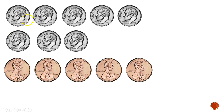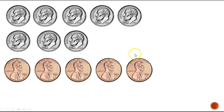Remember, a dime is worth 10 and a penny is worth one. We're going to count by tens first: 10, 20, 30, 40, 50, 60, 70, 80. Now we're counting by ones: 81, 82, 83, 84, 85. I'm going to add another coin here — watch carefully and determine if we're going to count by 10 or go up by one.